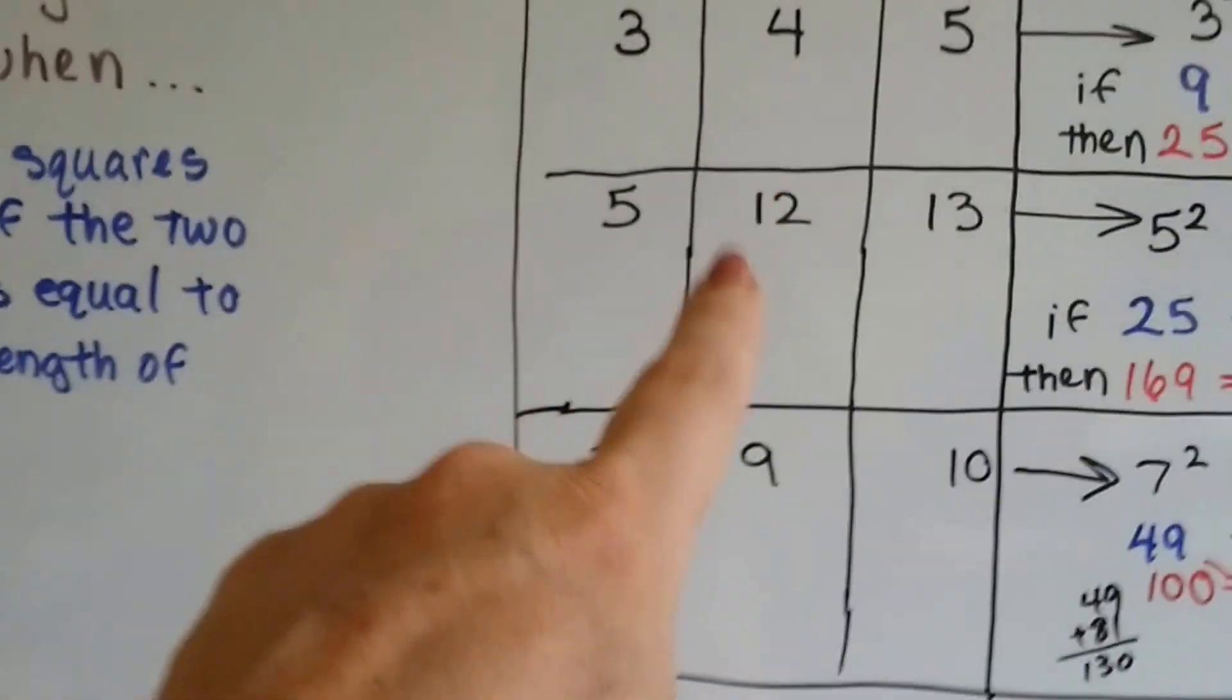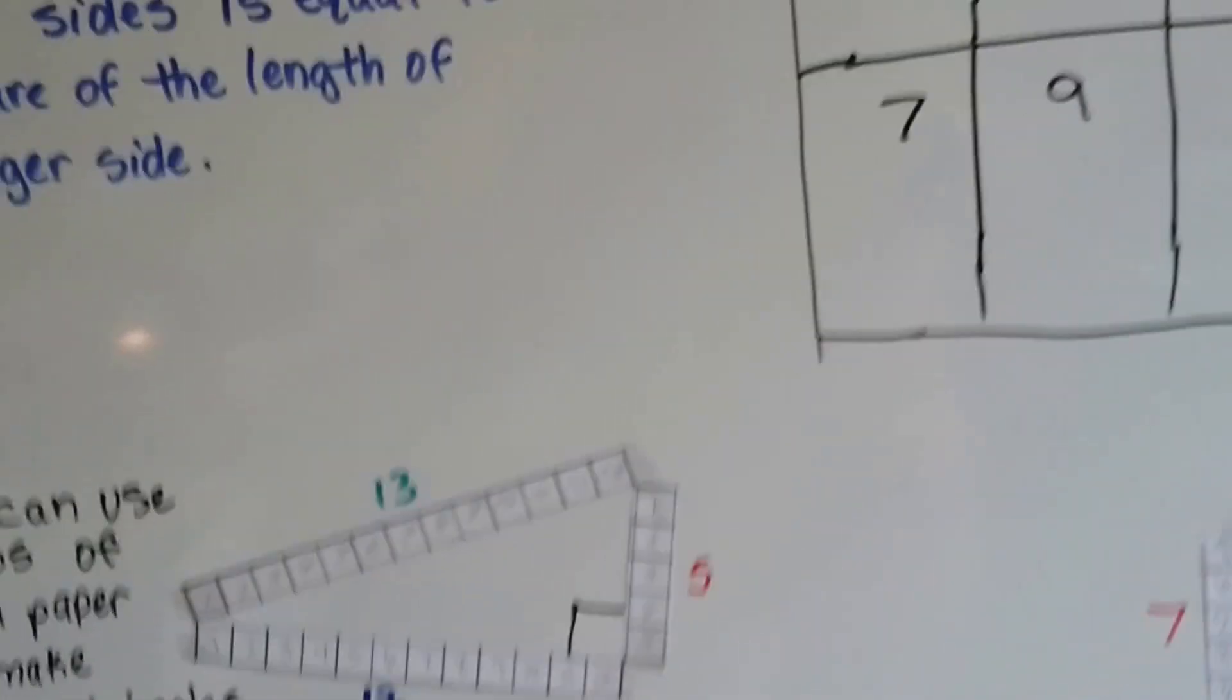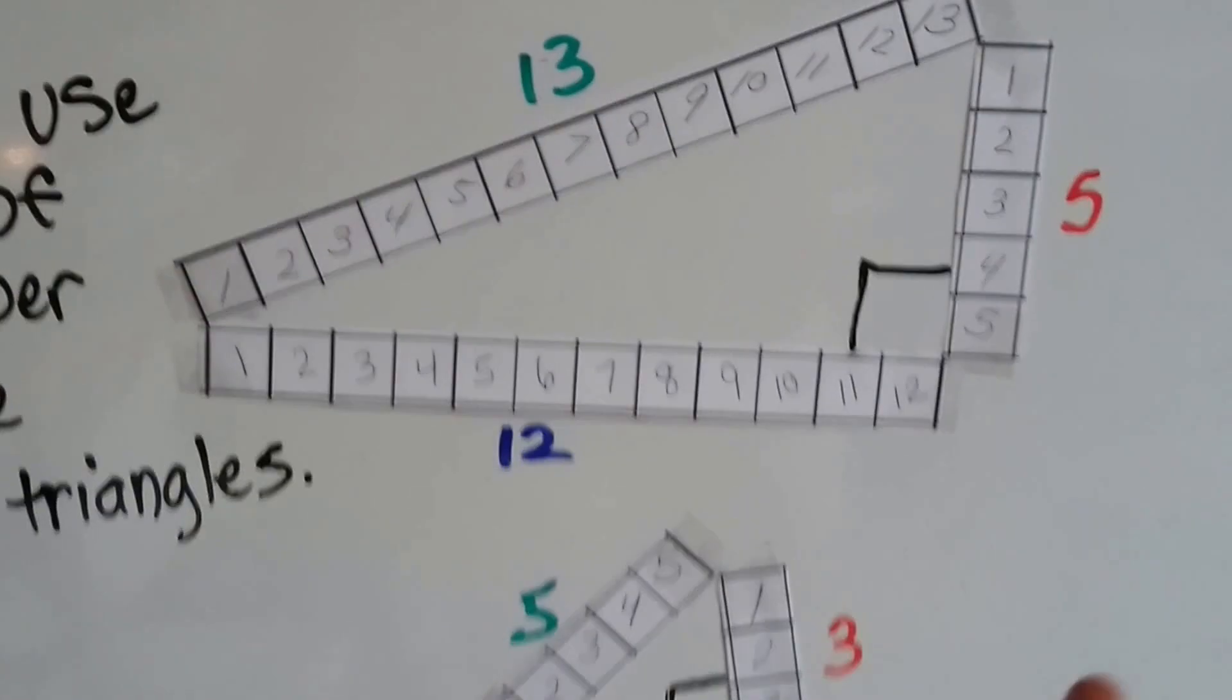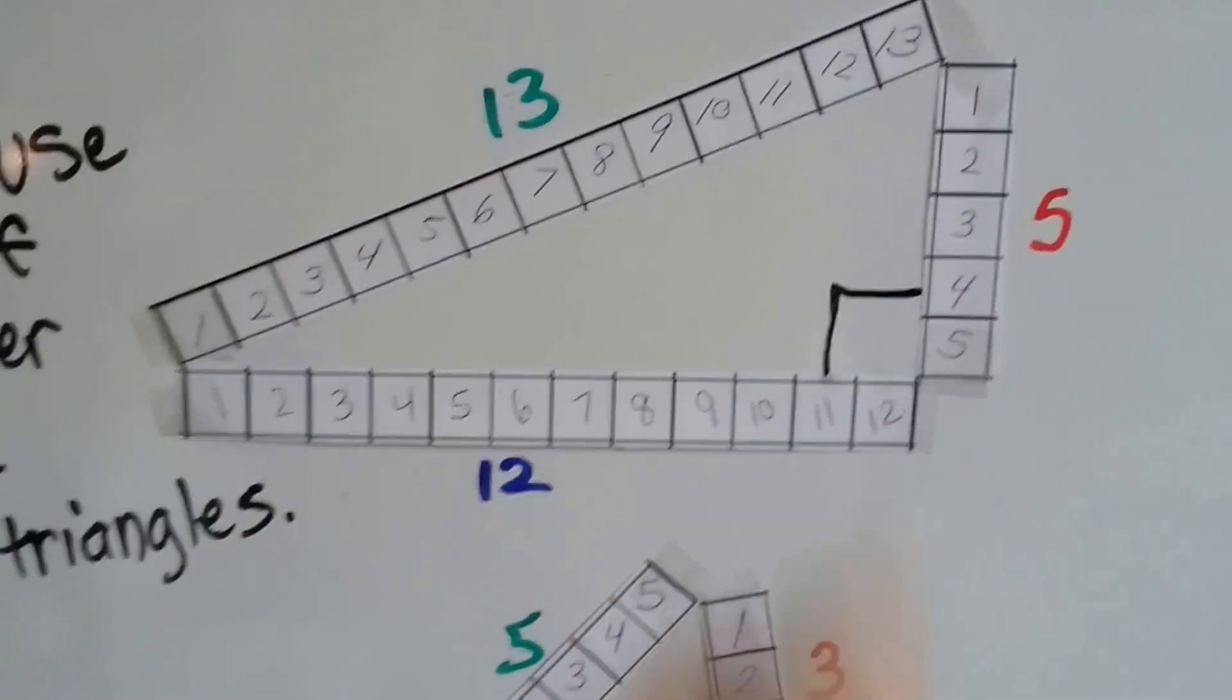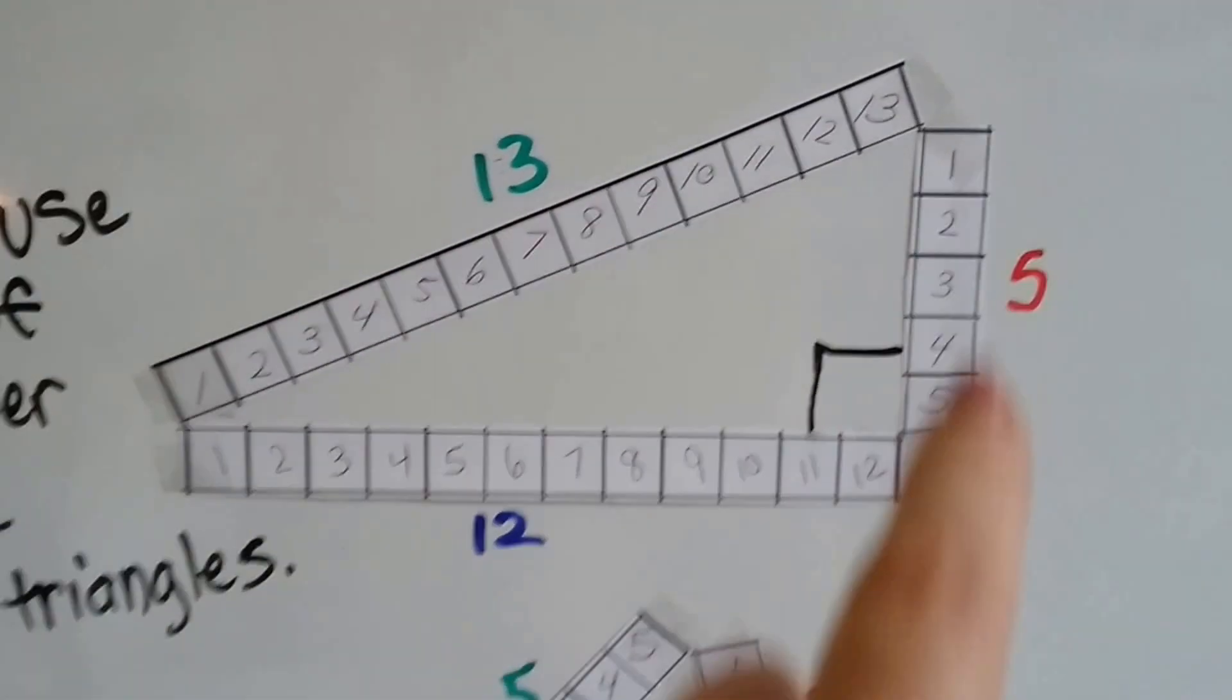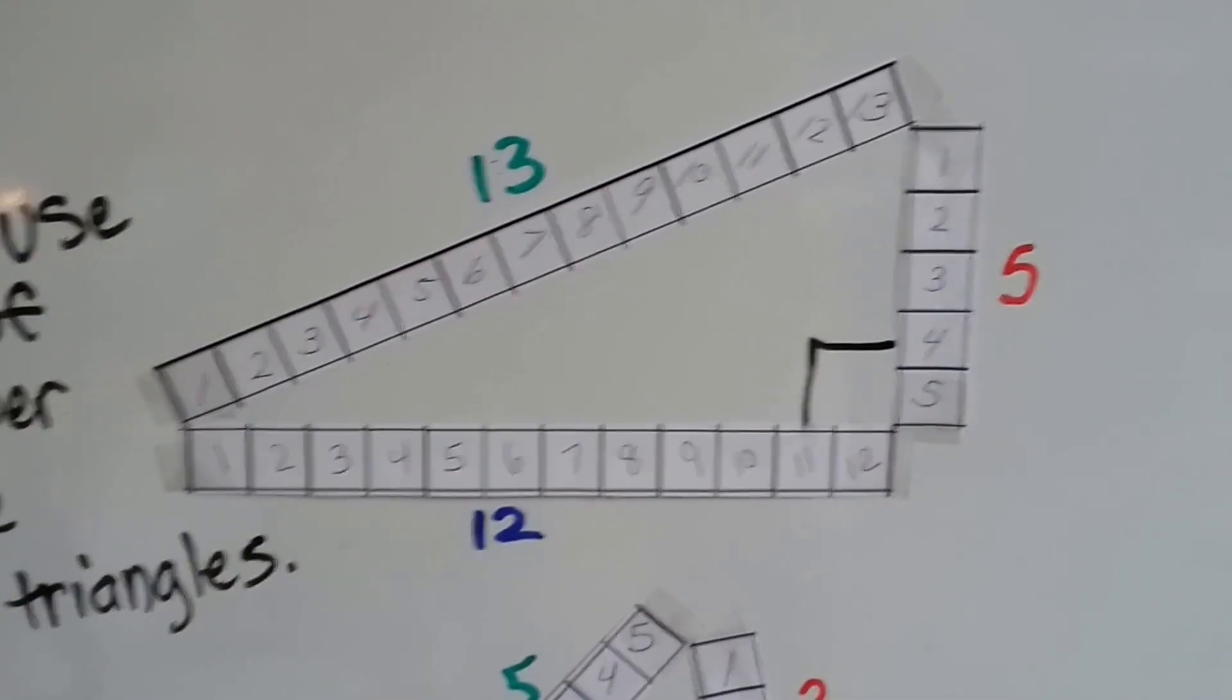And then for the 5, 12, and 13, well, we could do the same thing. We've got 5, we've got 12, and we've got 13 units. See that? And it makes a nice right triangle.